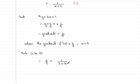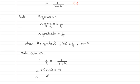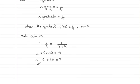Multiplying both sides by 9 times the bracket 3 plus k, the 9 cancels on the left leaving 2 lots of 3 plus k, and the right-hand side gives 9. Expanding the bracket gives 6 plus 2k equals 9. Taking 6 from both sides, 2k equals 3. Therefore k equals 3 over 2. Find the value of k: k equals 3 over 2, for 4 marks. That brings us to the end of question number 7.